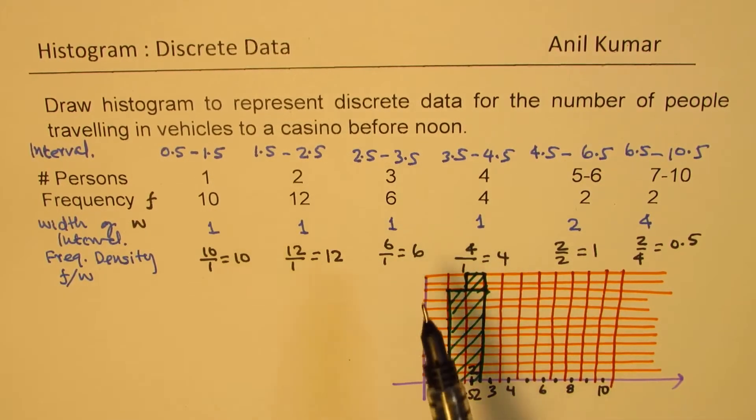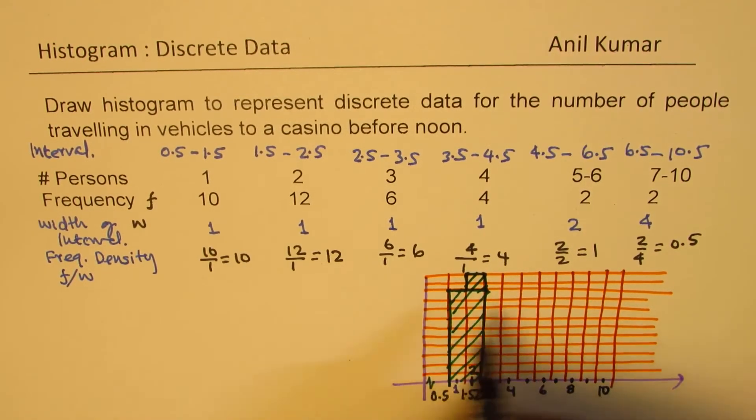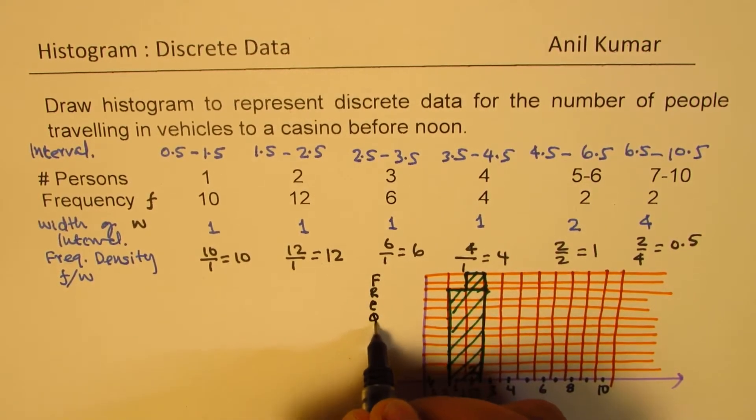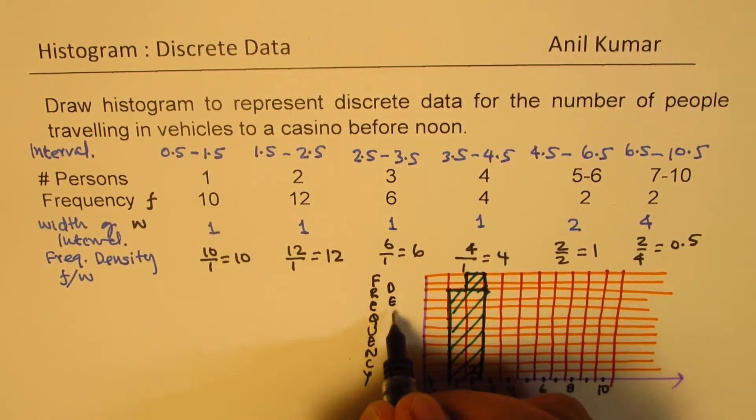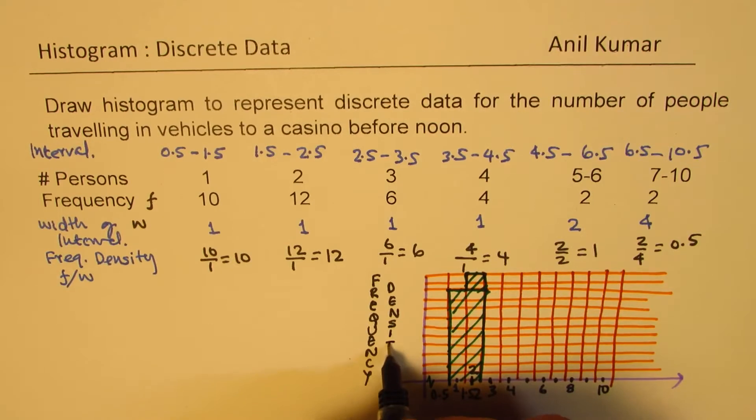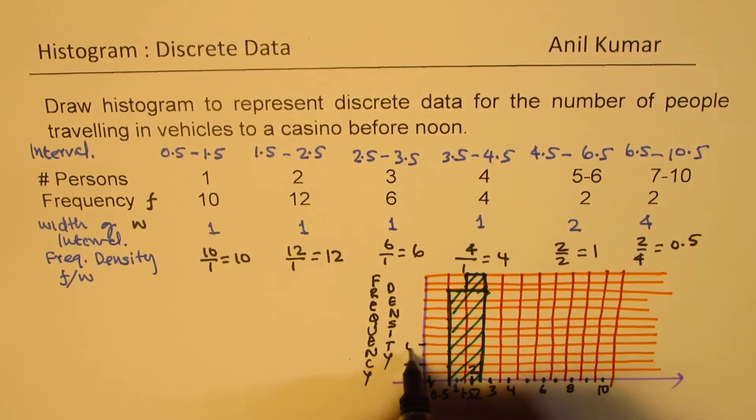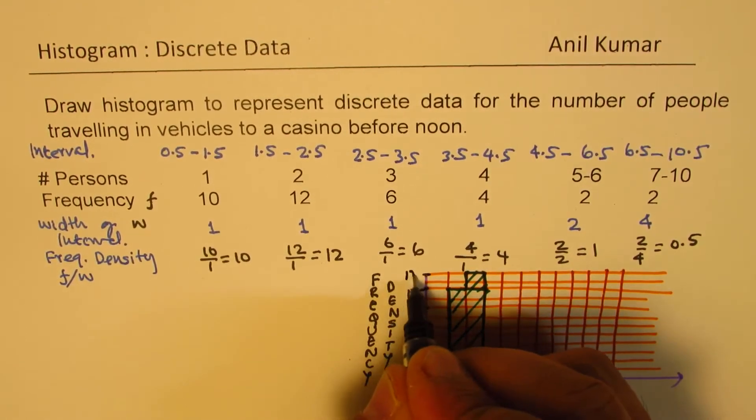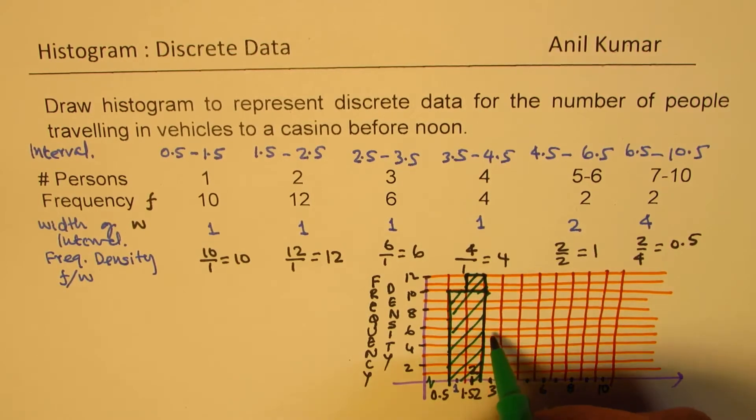Now, 3 will go up to the height of 6, since that is the frequency density. Let me write here, frequency density. So we'll go by 2, 4, 6, 8, 10, 12. Good. So we get 2. And for 3, it is up to 6. So that is 3, up to 6.